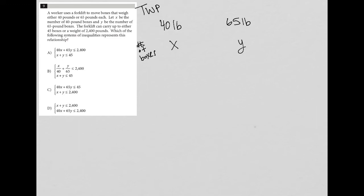And Y be the number of 65. So I'll put Y over here in the column under 65. The next sentence says the forklift can carry up to either 45 boxes. Okay, so 45 boxes or 2,400 pounds.